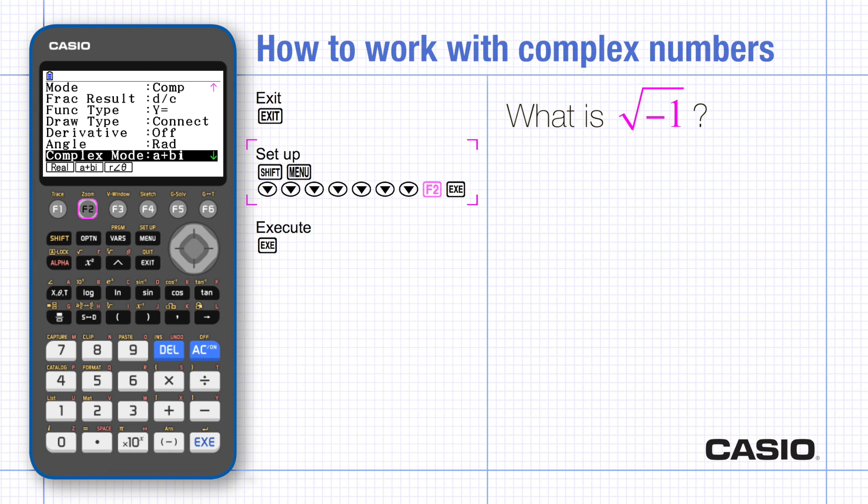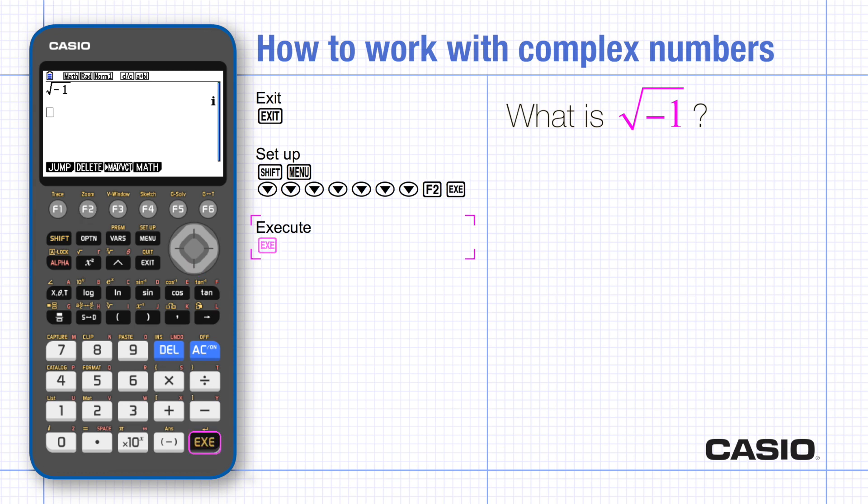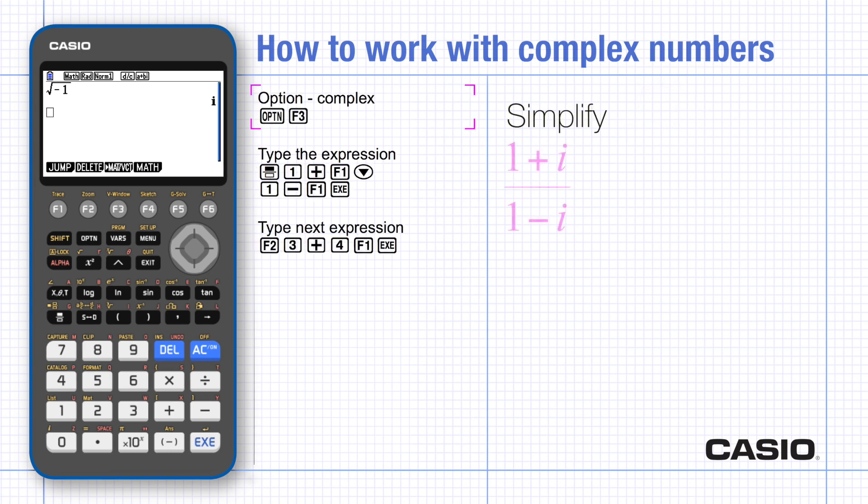Now when you execute the calculation, there's no need to type it again and a complex answer is given. The menu for complex numbers is under option complex numbers. Use the fraction template to type the expression and use F1 to type in the i.